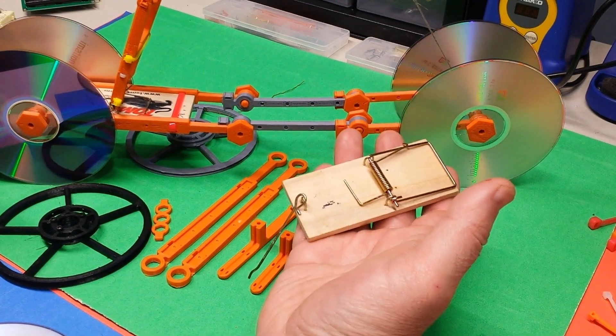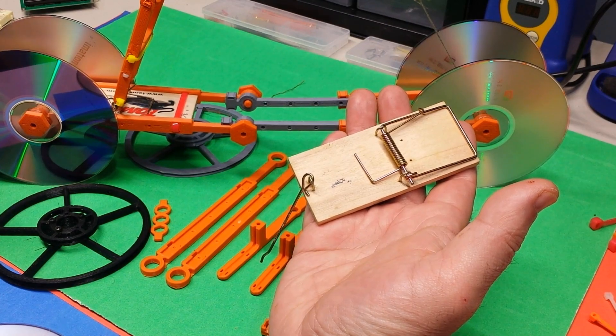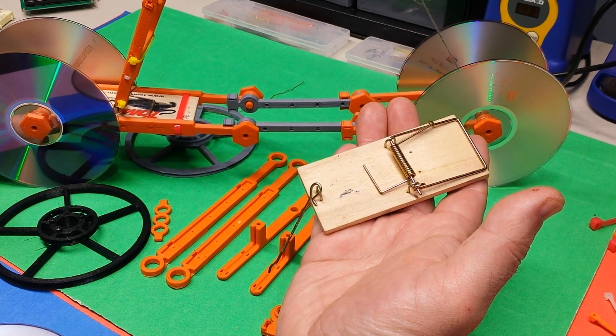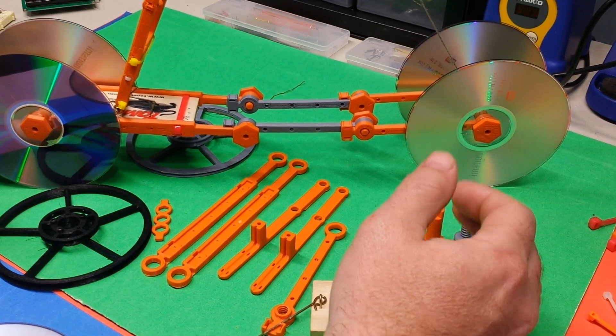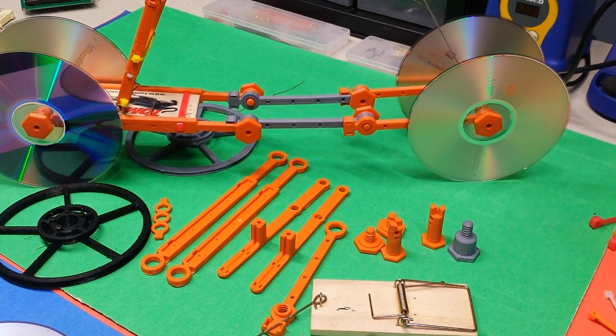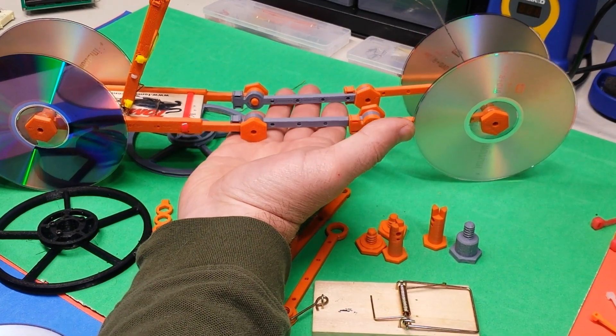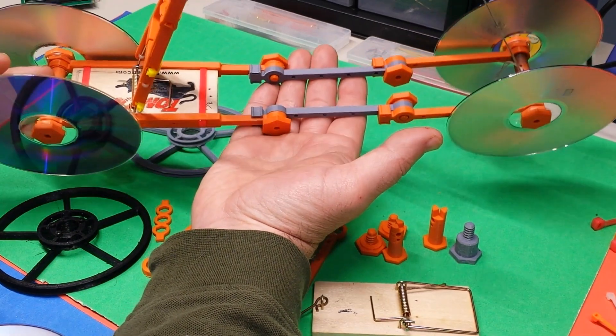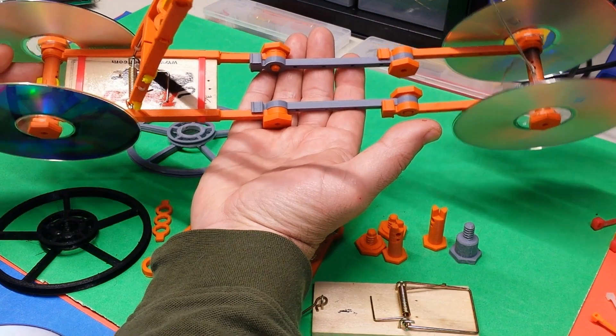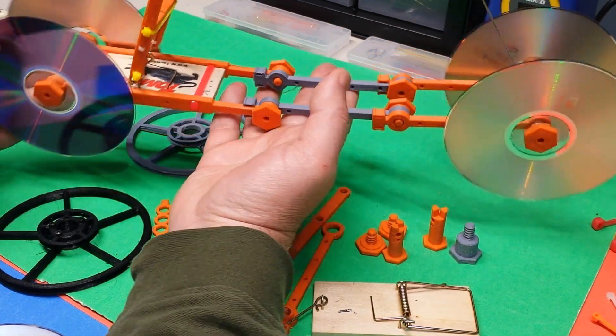It's based on the age-old physics class experiment where you take a mousetrap and try to get the car to go as far as you can. In the past we've seen balsa wood versions of this and various other versions, but I thought it was time to make a modular 3D printed one. This one's designed on FreeCAD and you can see some of the features of it here. I'll walk through how it operates and all the different parts.